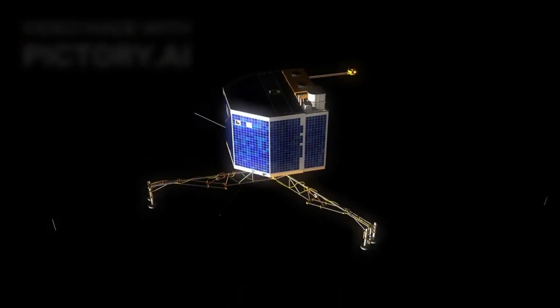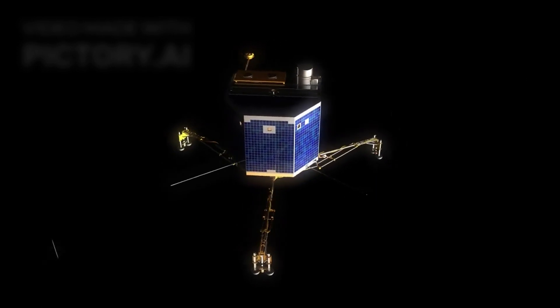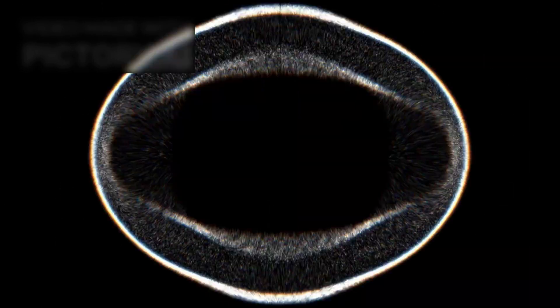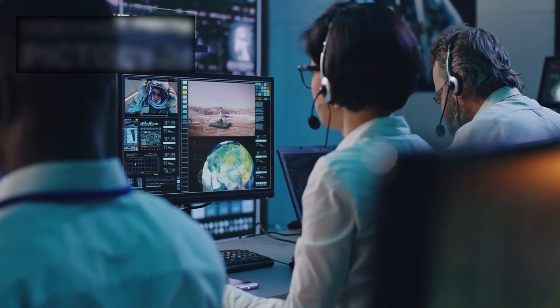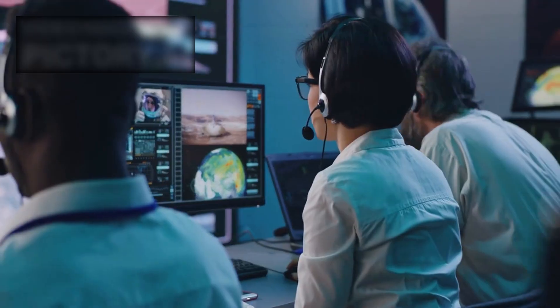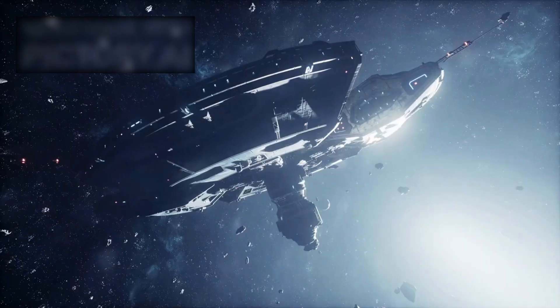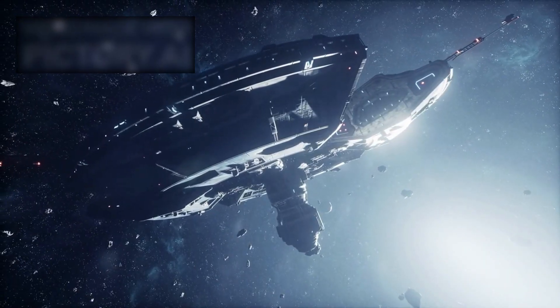But there's a reason for the Level 5 alert. Within days, 3I Atlas begins to challenge every model ever built for interstellar comets. Its chemistry is unlike anything recorded, its trajectory precise yet unsettling, and its behavior so alien that astronomers stop calling it a comet at all. Whispers spread through mission control rooms, questions no one dares to voice aloud but everyone is calculating silently. This is no longer scientific curiosity. It's a race against time to understand what we are seeing before it vanishes forever.